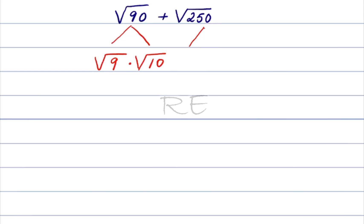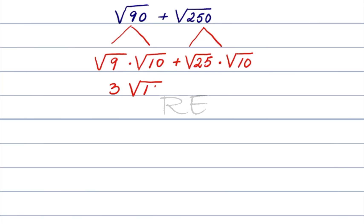250 is 25, the perfect square, times 10. So square root of 250 is square root of 25 times square root of 10. 9 is a perfect square, square root of 9 is 3, giving us 3 square root of 10.